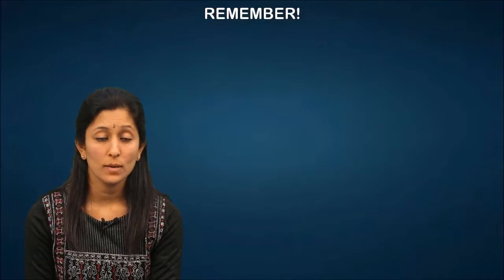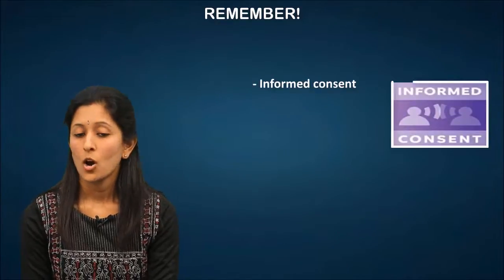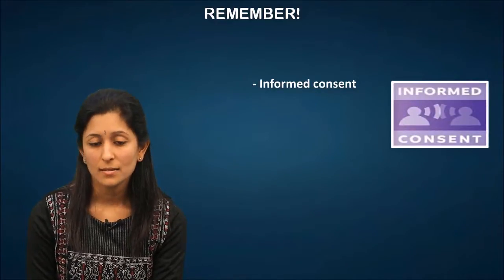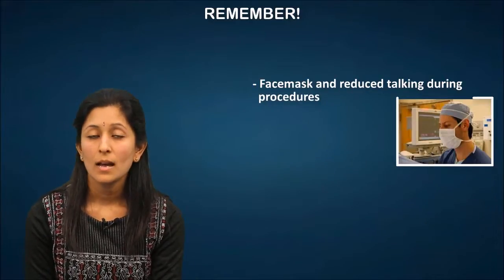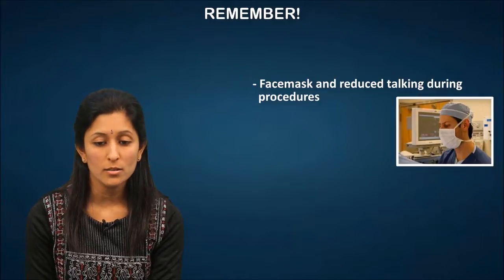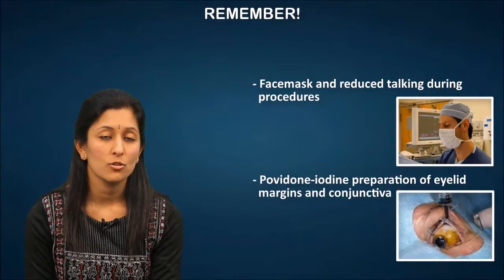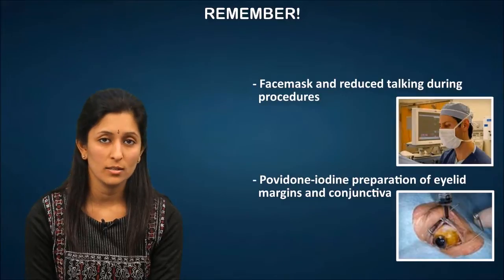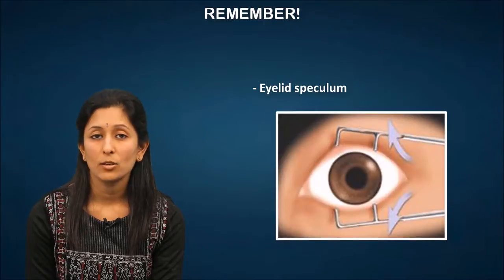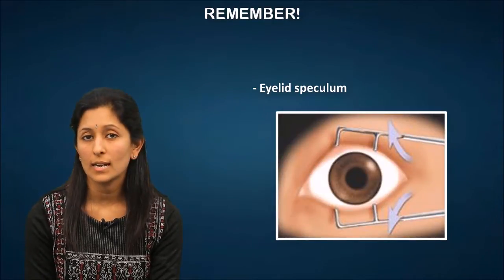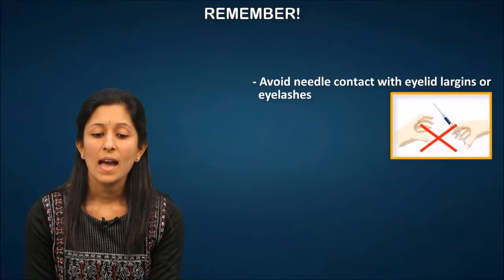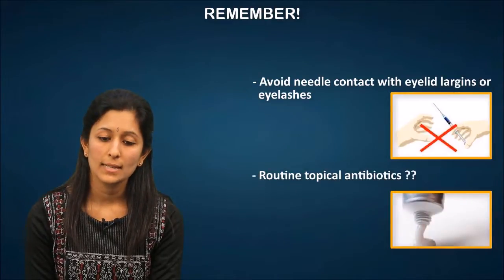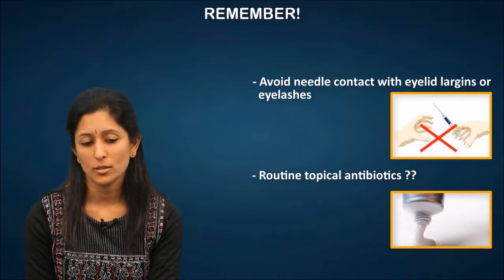With intravitreal injections, you must remember certain key points. Always take an informed consent. Aseptic precautions cannot be overemphasized. A face mask and reduced talking during the procedure are important. Povidone-iodine preparation of the eyelid margins and the conjunctiva is crucial in prevention of endophthalmitis. An eyelid speculum should be applied carefully and properly so that the lashes do not come in contact with the needle or the injection site. The use of routine topical antibiotics is still controversial but can be resorted to.